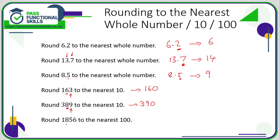In this final example, we're rounding to the nearest hundred. Here is the hundreds column, so we need to look at the value of the tens column immediately to the right. Here we've got a 5 in the tens column, so we round up. That rounds up to 1900 — 1856 is between 1800 and 1900, but because it's 56 we round up to 1900.